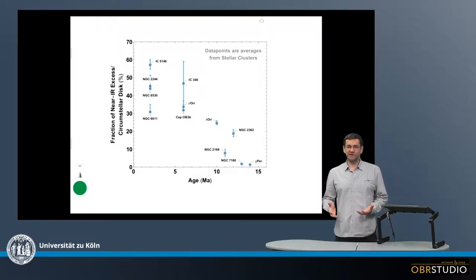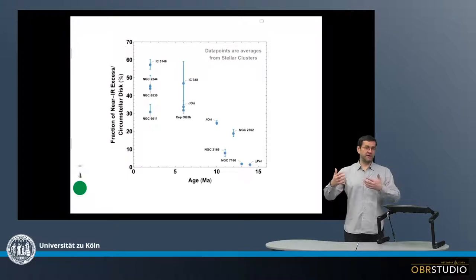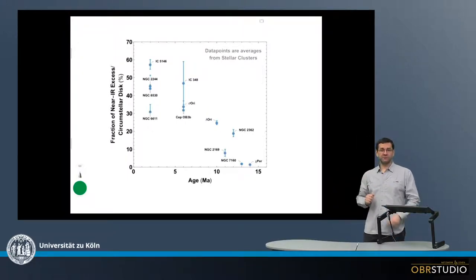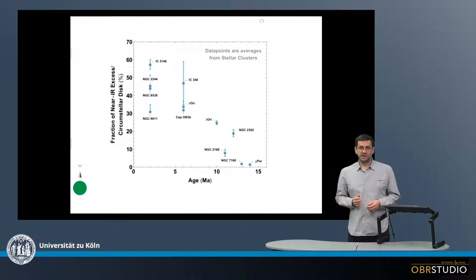Stars typically form together in large molecular clouds that start to collapse, or parts of these collapse, and then stars form inside this molecular cloud. Around some of these stars, circumstellar disks or protoplanetary disks start to form.